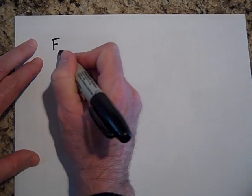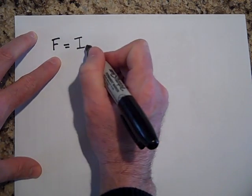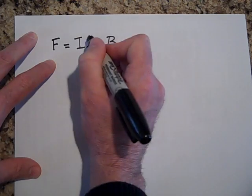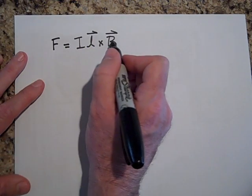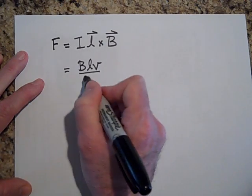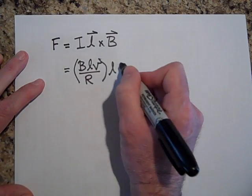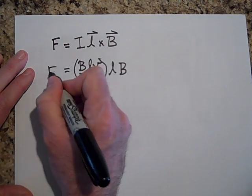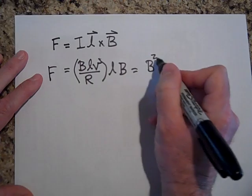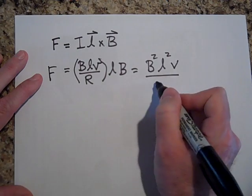So how much force do I need to pull at constant speed? The applied force must equal the magnetic braking force: F equals I·L×B. Since L is perpendicular to B, and substituting I equals B·L·V over R, we get F equals (B·L·V/R) times L times B, which simplifies to B²·L²·V over R.